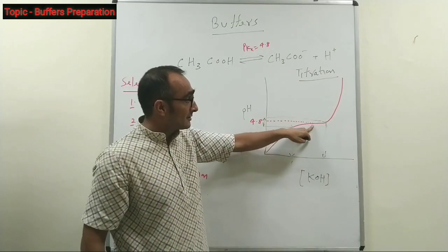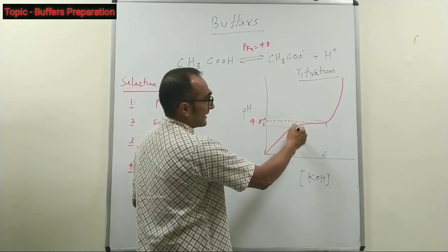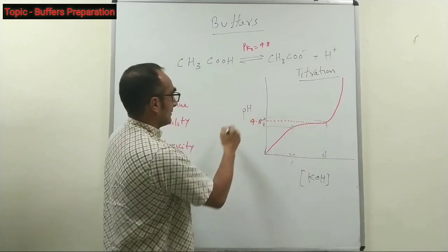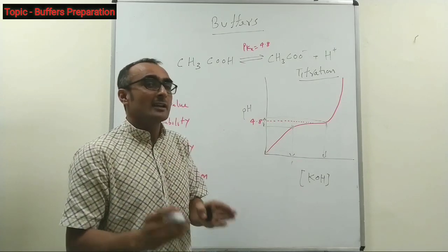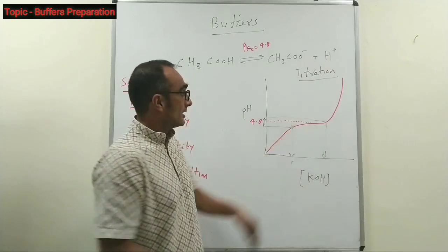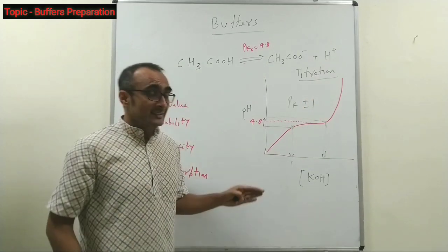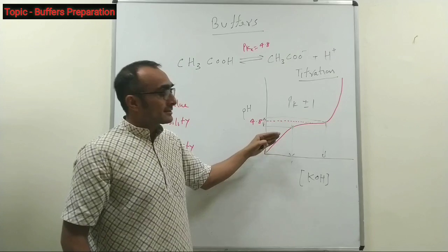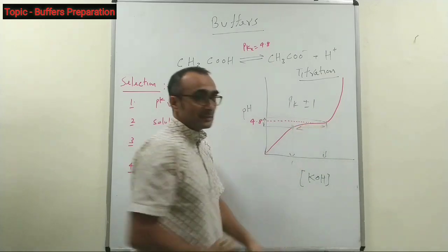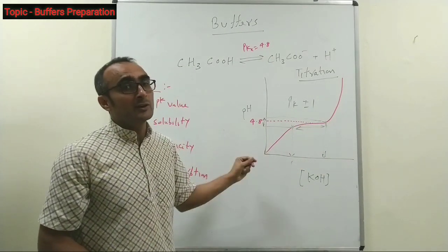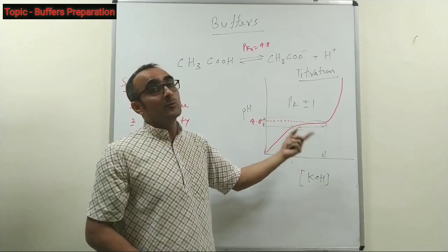The midpoint of this graph shows the pKa value of acetic acid, which is equal to 4.8. This plateau is called the buffering capacity — how far acetic acid can resist change in pH is called the buffering capacity or buffering range. This buffering range is equal to pKa ± 1. Because the pKa for acetic acid is 4.8, this plateau is observed from 3.8 to 5.8. It means if you keep acetic acid between pH 3.8 to 5.8, it will resist change in pH — acetic acid will work as a buffer.